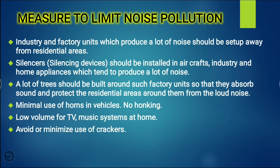Measures to limit noise pollution: Industry and factory units which produce a lot of noise should be set up away from residential areas. Because factories create a lot of noise pollution, they should be built far from residential areas. Additionally, silencers or silencing devices should be installed in aircrafts, industries, and home appliances that tend to produce a lot of noise.